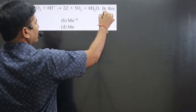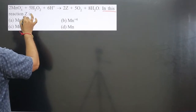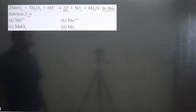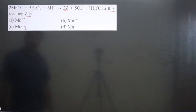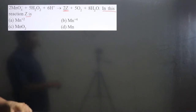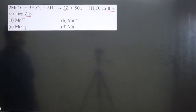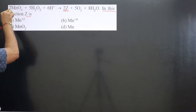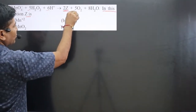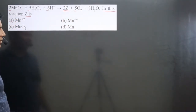The question says: in the given chemical reaction, we have to identify Z — specifically, what species is present in place of Z. If you look at the equation closely, you can see H⁺ ion is given here, which means the chemical reaction is taking place in acidic medium. This equation is already balanced because coefficients are given; you just need to identify the species present at Z.